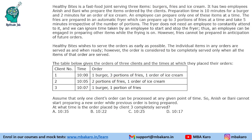Now for client 3: only one client's order can be processed at a time, so employees cannot start a new order while the previous one is being prepared. Client 1's order finishes at 10:10. Client 2's order — two portions of fries — takes 5 minutes, completing at 10:15. Then client 3's order begins at 10:15: burger takes 10 minutes and fries take 5 minutes, so the order takes 10 minutes total and will be completed by 10:25.